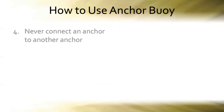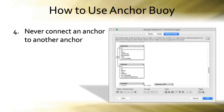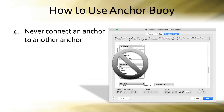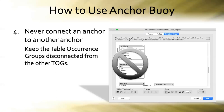The fourth and final premise of Anchor Buoy: you never connect an anchor to another anchor. Between material and vendor, for example — those two anchors connected violates the anchor buoy method and loses many of its benefits. Keep those table occurrence groups disconnected from other table occurrence groups, otherwise it will look like all your table occurrences are related to each other.